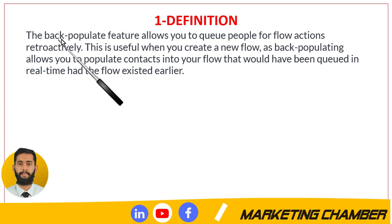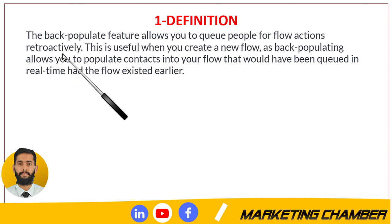So what is the definition? The back populate feature allows you to queue people for flow actions retroactively. This means that when you back populate a flow, you include people from the past — like if someone placed an order in the past 10 days but you made the flow today, it will not include that person unless you back populate.